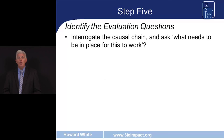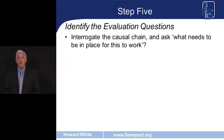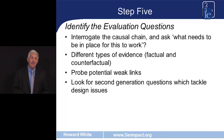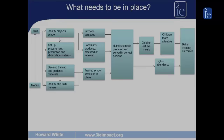Step five is to identify the evaluation questions. Really interrogate the causal chain to ask what needs to be in place for this programme to operate. Think about different types of evidence that might be needed, probing for potential weak links in the causal chain, and finally think about second generation questions which address design issues.